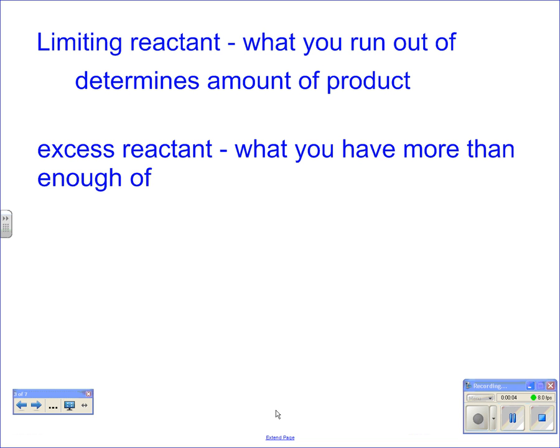Now we're going to talk about limiting and excess reactants. In a chemical reaction, a reaction can only proceed until we run out of reactants. The odds of running out of both reactants at the same time is pretty slim, so usually you run out of one thing before the other. As soon as you run out of one reactant, the reaction cannot go anymore — you cannot make products. The one you run out of limits the amount of product you can produce; we call that the limiting reactant.